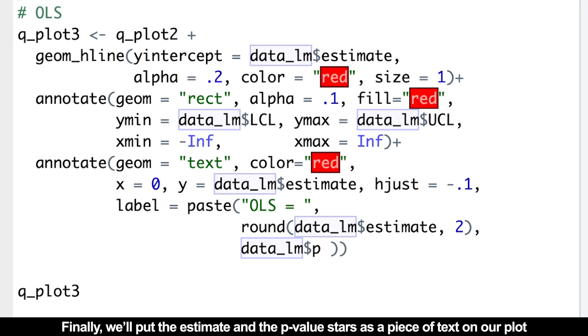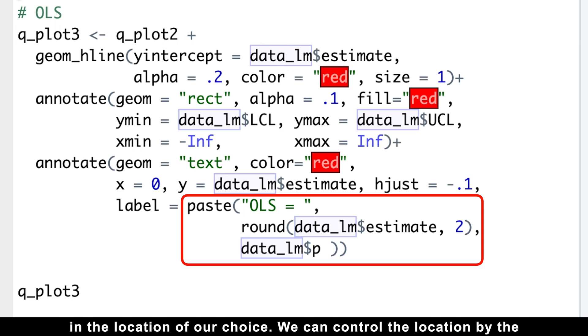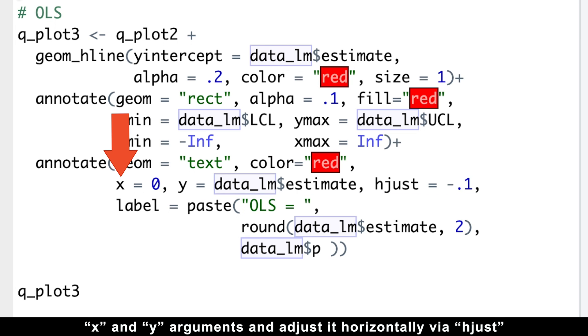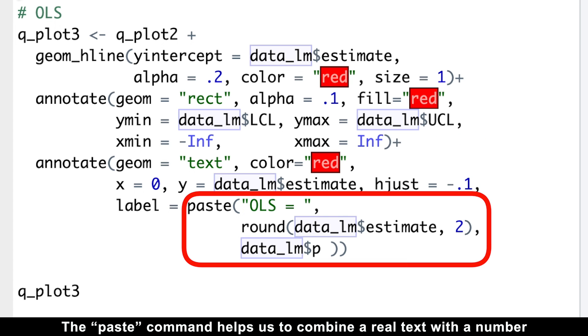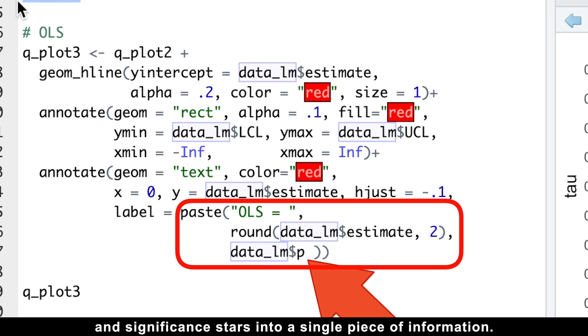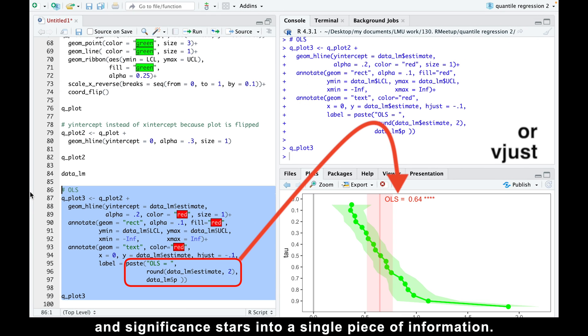Finally, we'll put the estimate and the p-value stars as a single piece of text on our plot in the location of our choice. We can control the location via the x and y arguments and adjust it horizontally via hjust or vertically via vjust when we need to. The paste command helps us to combine a real text with a number and significant stars into a single piece of information.